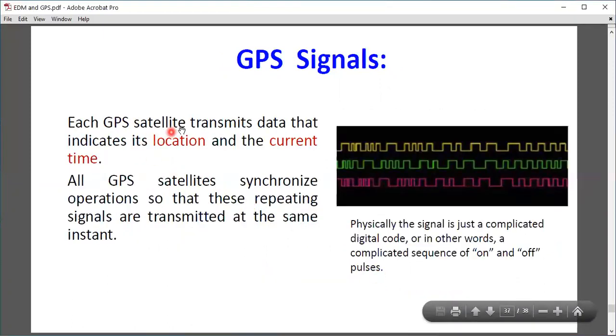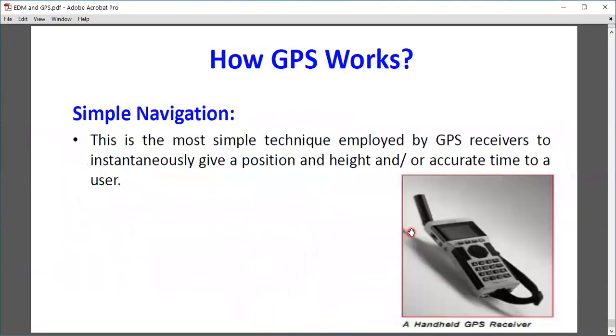GPS signals: GPS satellites transmit data that indicates their location and current time. All GPS satellites synchronize so that signals are transmitted at the same instant. Basically, GPS is just a complicated digital code, or in other words, a complicated sequence of on and off pulses. Simple navigation is the most simple technique employed by GPS receivers to instantaneously give a position, altitude, and time to the user.